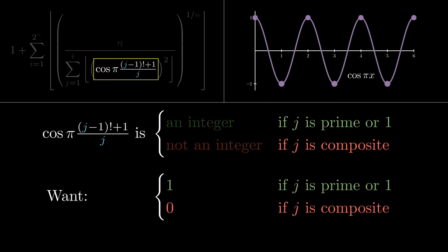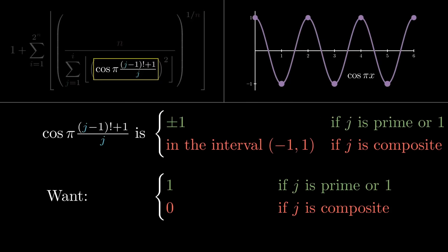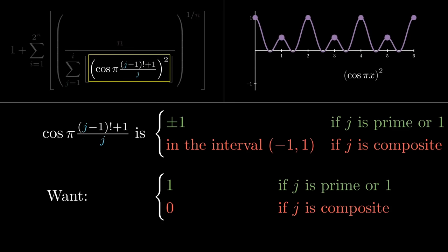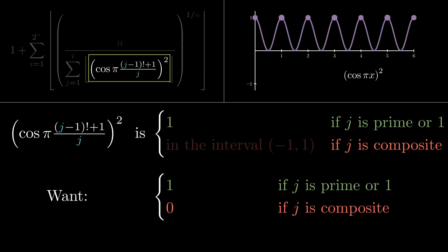This means that the cosine in Willans' formula spits out plus or minus 1 if j is 1 or prime. And it spits out a number strictly between negative 1 and positive 1 if j is composite. What's next? Then we square the cosine. The negative 1s become positive 1s when we do this. So the squared cosine in Willans' formula is 1 when j is prime or 1. And it's a non-negative number that is strictly less than 1 when j is composite.